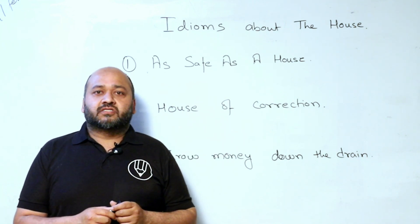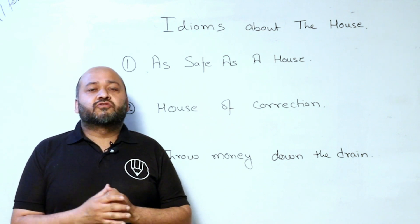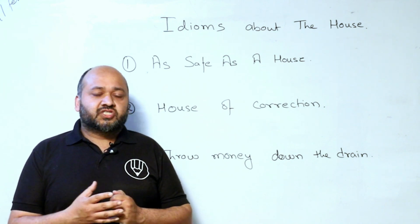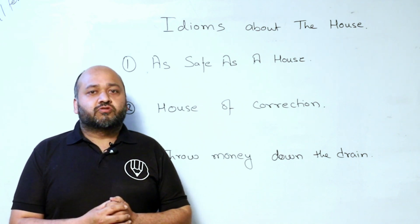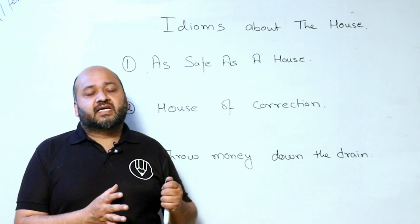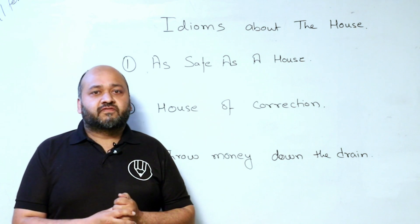Second, house of corrections. A prison or jail can be used as house of corrections.